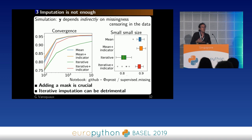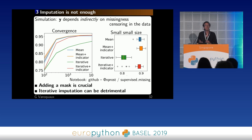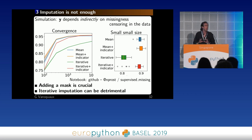So we have two situations: one where the missingness is not informative, in which case the iterative imputer is better; one where the missingness is informative, in which case the iterative imputer can actually harm because it makes it harder for the learner to learn this informative missingness pattern.